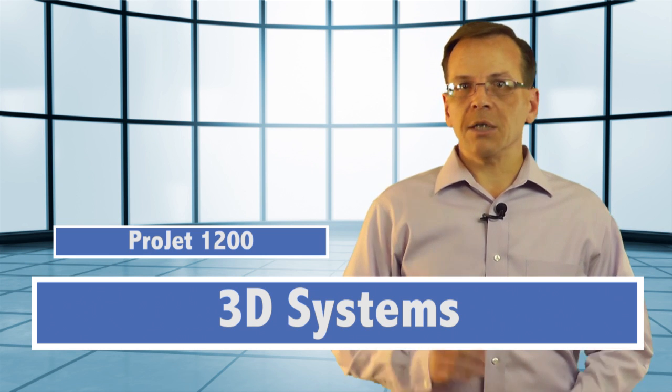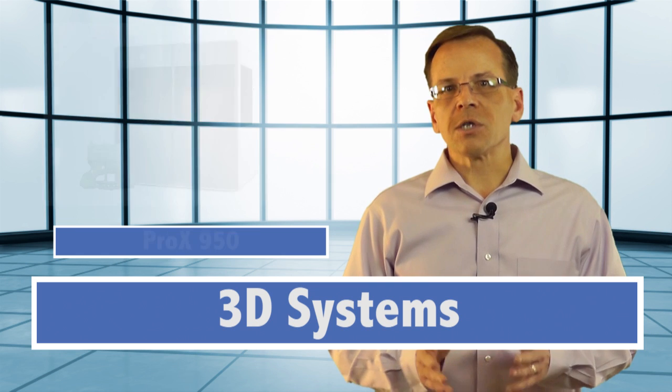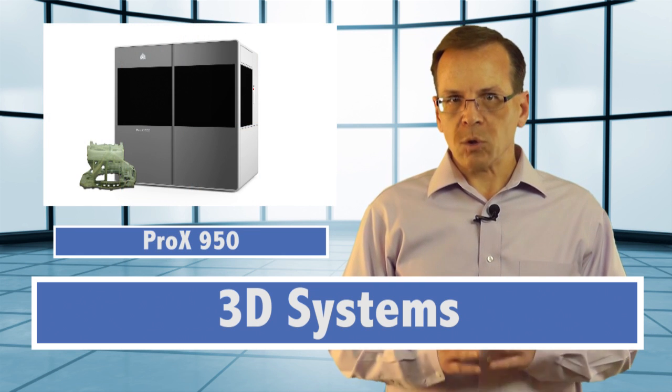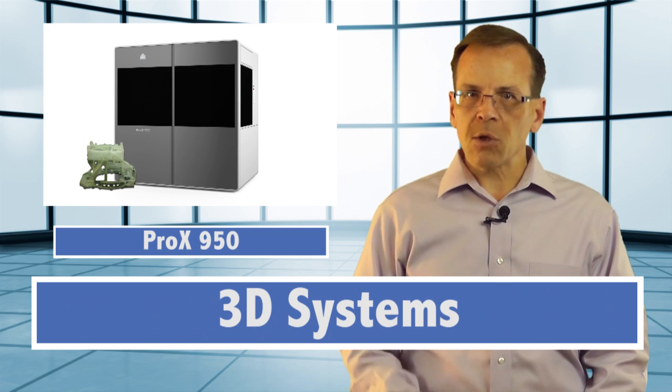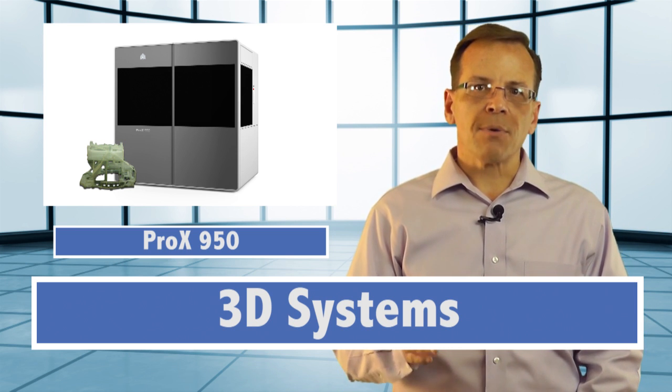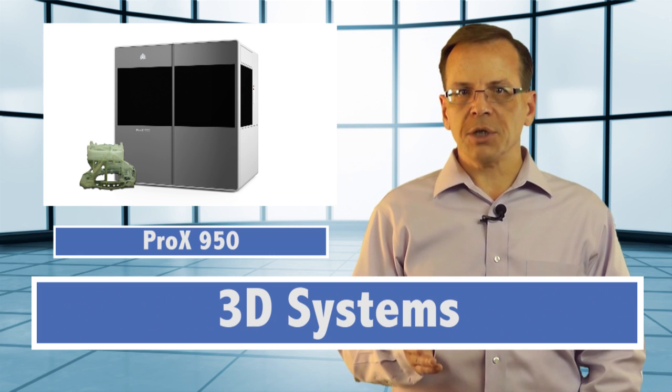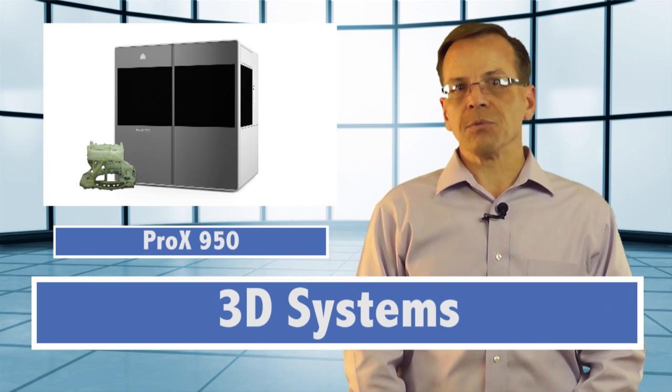For much larger parts or hundreds of small parts, 3D Systems introduced the ProX 950, which replaces the iPro 9000XL. By the way, that ProX name is also new. ProX is the brand for the larger production-oriented machines where Projet is the label for small and mid-sized professional 3D printers.